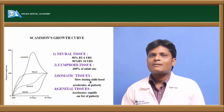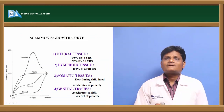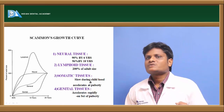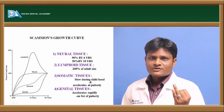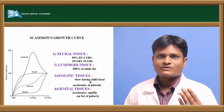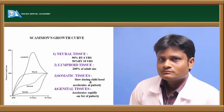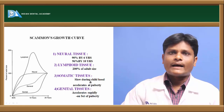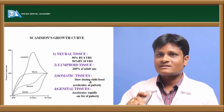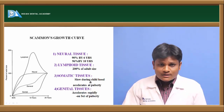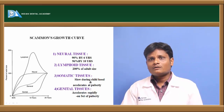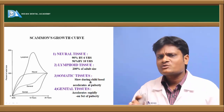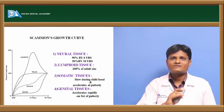Scammon's growth curve is a graphical representation of the growth of different tissues. Body tissues are divided into four types: neural, general, lymphoid, and genital. Neural tissue grows rapidly and by around six to seven years of age reaches 96–97% of its adult size. That means by six to seven years of age, an individual essentially has the neural tissue that is present in adulthood.